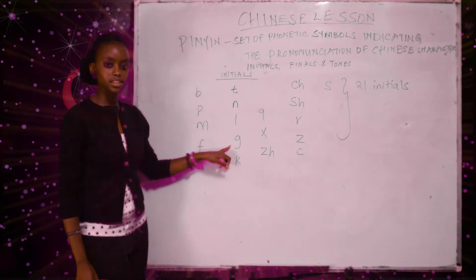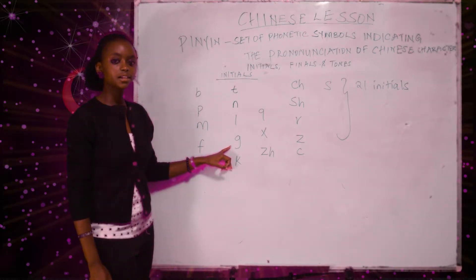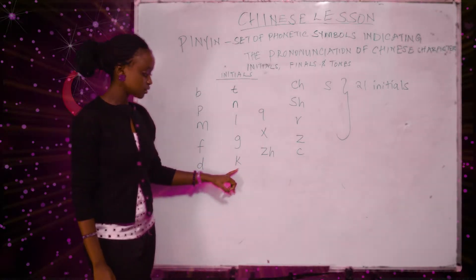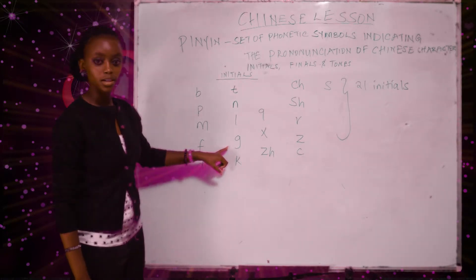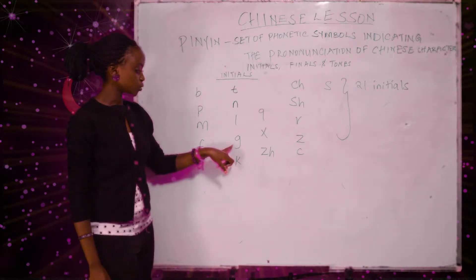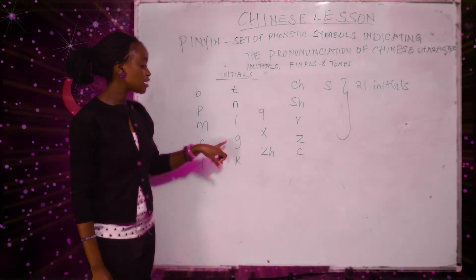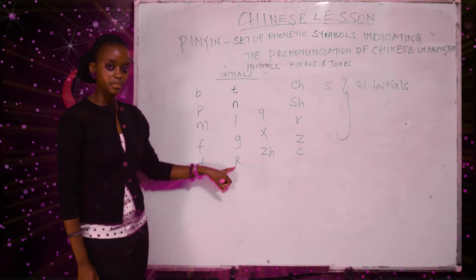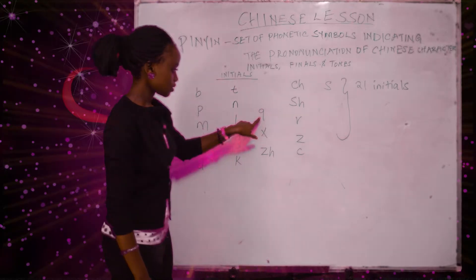The next one is the G. You pronounce it as guh, guh. And the K is kuh, kuh. Please do not confuse as you pronounce G and as also as you pronounce K. So for the G is guh, guh, and for the K is kuh, kuh.